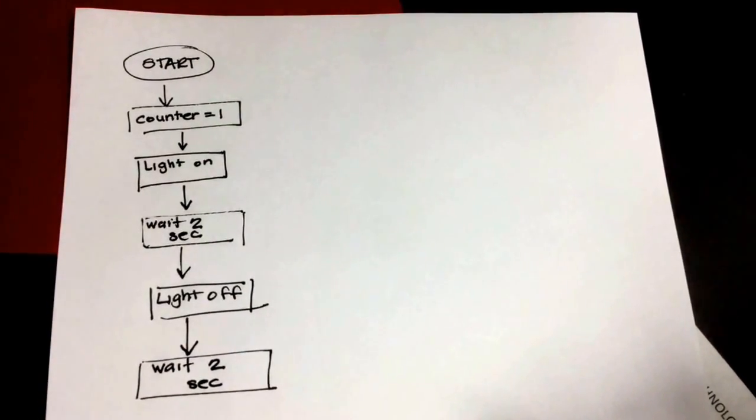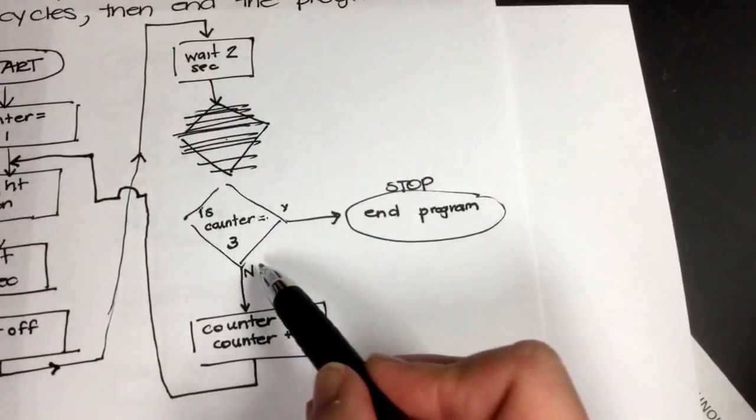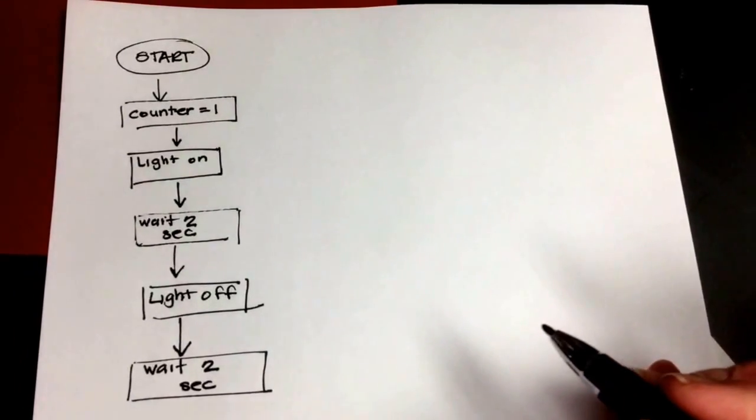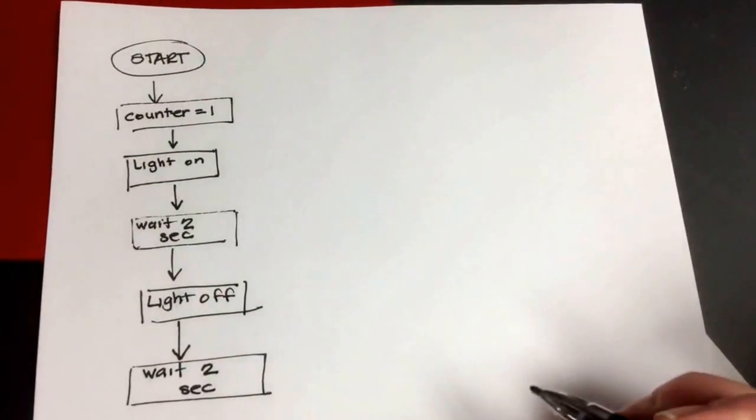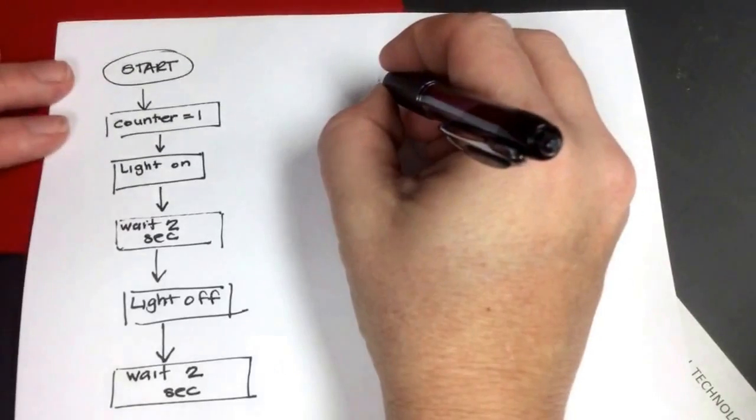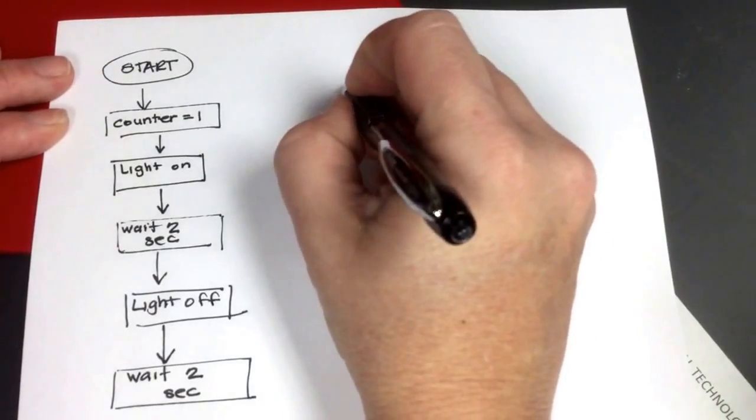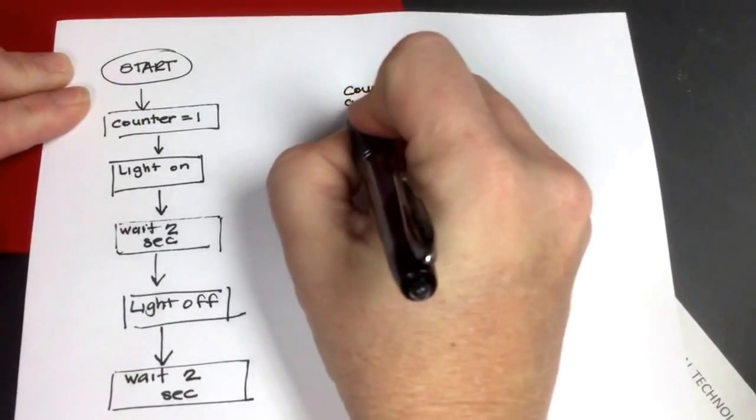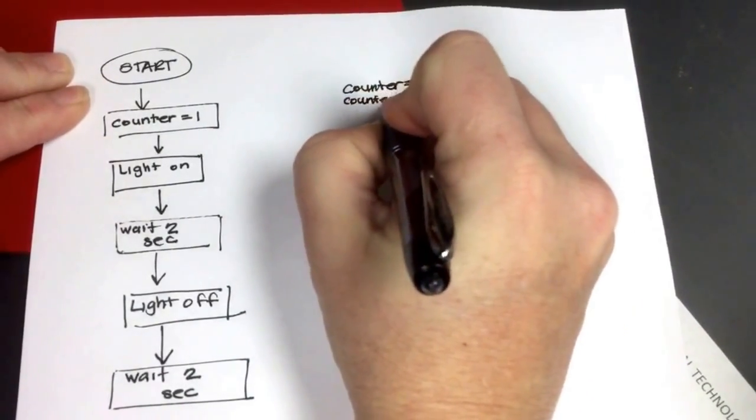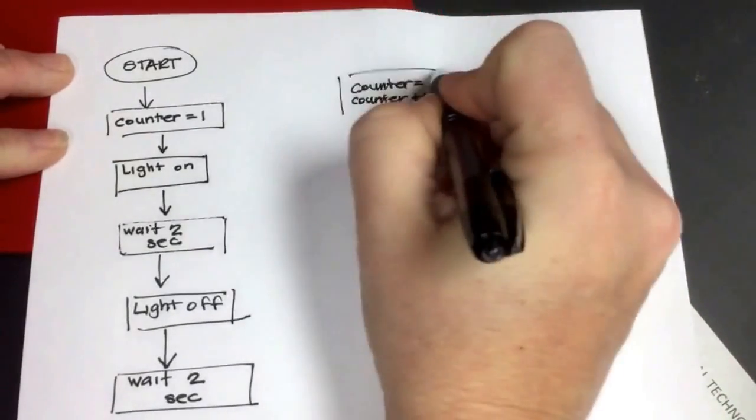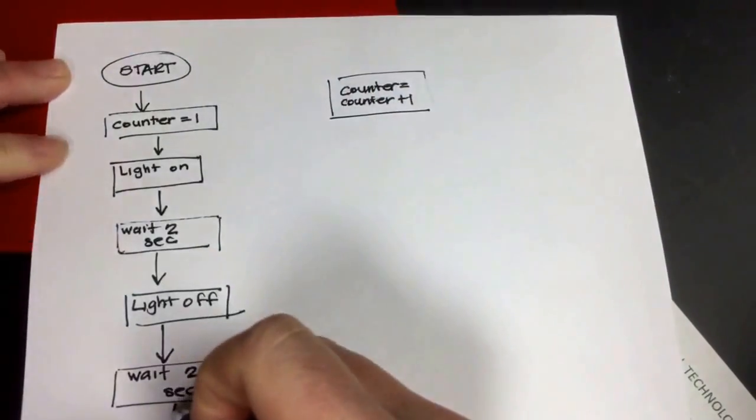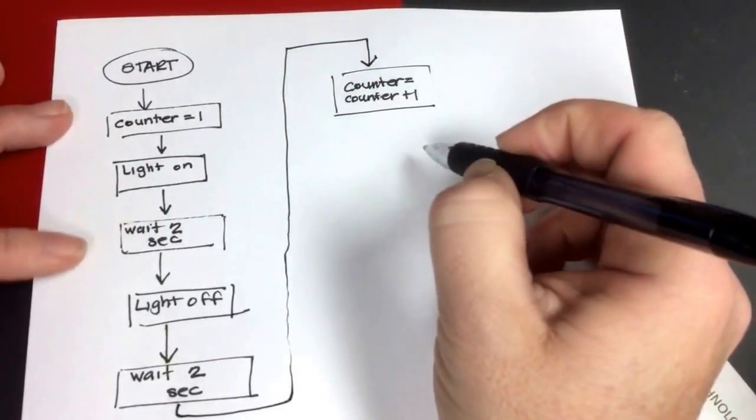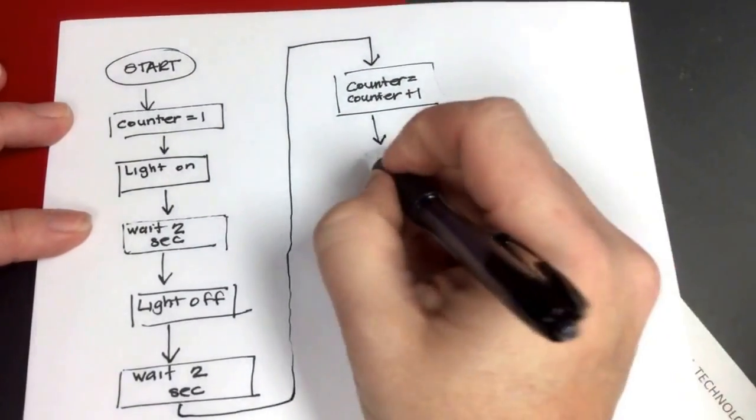Now, this time, the last time, remember, I decided to do my decision block first, now I could increment my counter first this time. There's no right or wrong way, you just have to pick the way you want to do it. So my cycle has only run one time now, my counter's already changed to two, because I haven't put my decision block in yet.